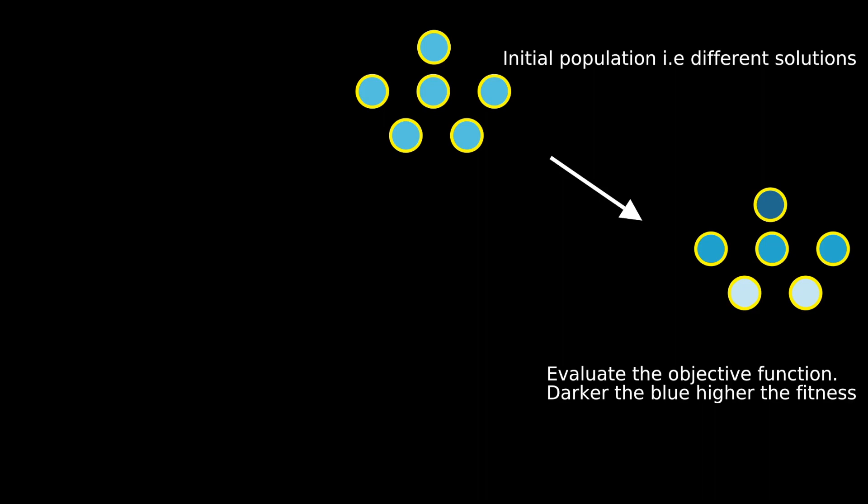When passed through the objective function, different solutions have different fitness values. Here, higher fitness chromosomes have been represented with darker shades of blue.